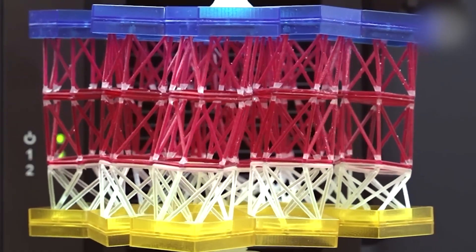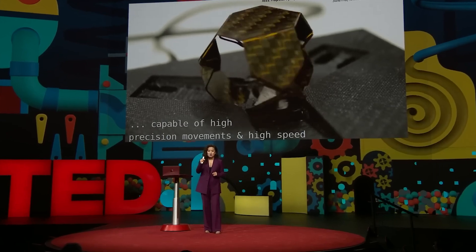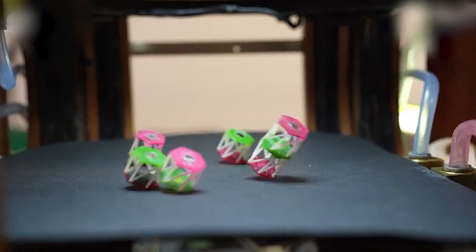This new tech, called a metabot, can grow, shift, and crawl. It follows commands and changes shape, all without a single moving part.